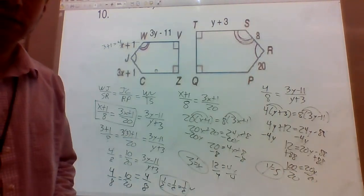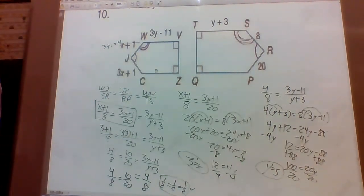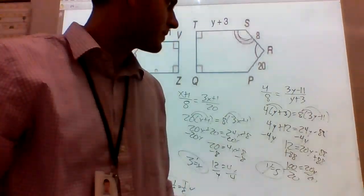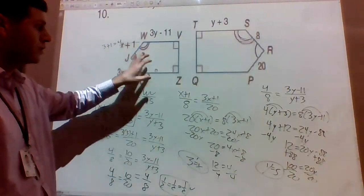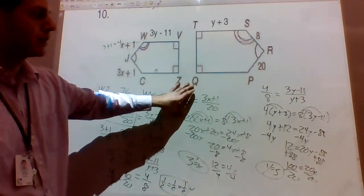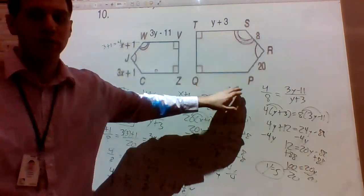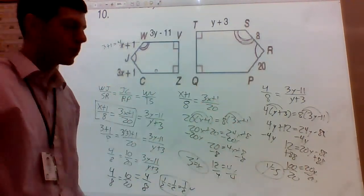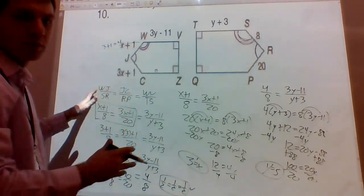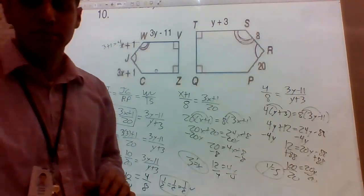That's the half sheet from Friday and Monday. Just set your ratios up and solve. A little more complicated because we had two variables — since we have two variables, we need two separate proportions, but they're all coming from the same similar figures.